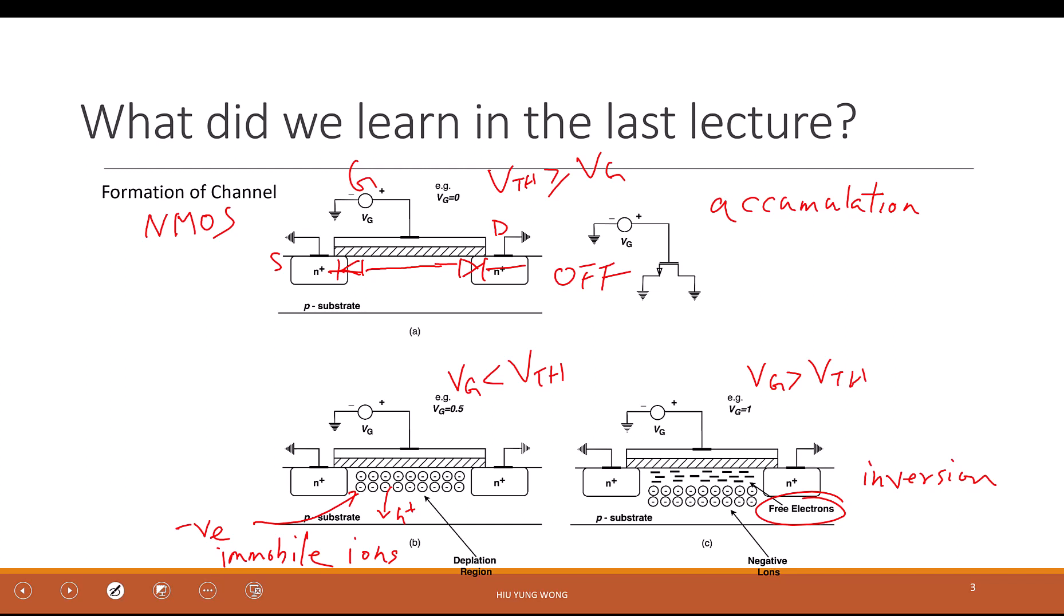And I forgot to say that. This is the so-called depletion, right? Because the substrate now does not have any free carrier. I mean, it has at the bottom, but not at the surface. It does not have holes, it does not have electrons. So it is depleted of carriers.